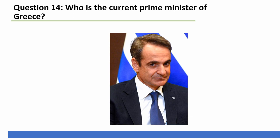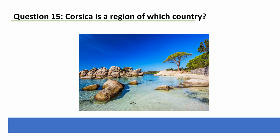A famous food in Greece is pastitsio, which is a Greek lasagna. Now lasagna is a famous dish in Italy. The Tyrrhenian Sea is the arm of the Mediterranean Sea between the western coast of Italy and the islands of Corsica, Sardinia, and Sicily. Corsica is a region of which country? And the answer is France.